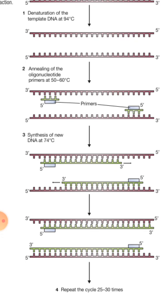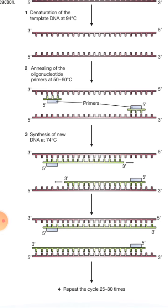DNA Taq polymerase attaches to the primer and then the further elongation and extension process begins. At the end of the process we get four DNA strands — we started with only one DNA template but at the end of the reaction we have four DNA strands.